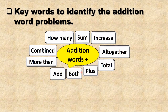Students, whenever a word problem is given to you, you get confused by reading it. So here I have a few keywords to help identify addition word problems. By knowing these words, you will be able to identify addition word problems very easily. Addition keywords are: how many, sum, increase, altogether, total, plus, both, add, more than, combined.